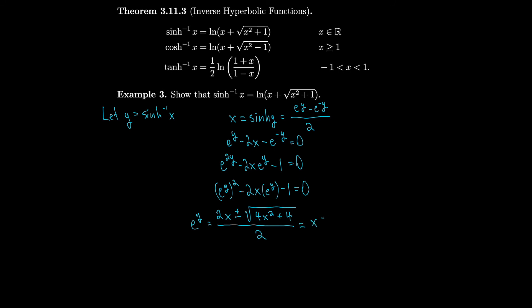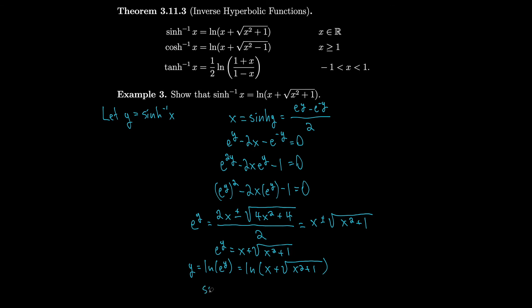That simplifies to x ± √(x² + 1). However, e^y is always positive, so we reject the minus and say e^y = x + √(x² + 1). Taking the natural log, y = ln(e^y) = ln(x + √(x² + 1)). But we let y = sinh⁻¹(x), so sinh⁻¹(x) = ln(x + √(x² + 1)), which is exactly what we wanted to prove.